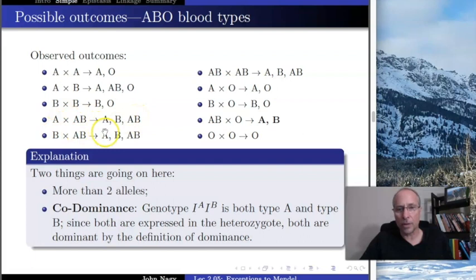What about B cross AB? Same thing, AB or B. AB cross AB also AB or A or B. Notice, nowhere can AB produce an O here yet.